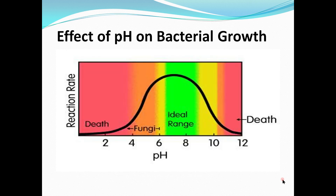As you can see in the graph, the effect of pH on bacterial growth shows that at very extreme pH values the bacteria die, while they survive within the optimal pH range.